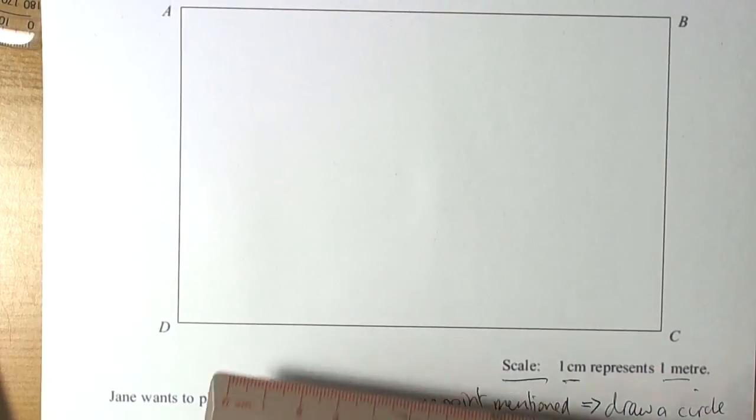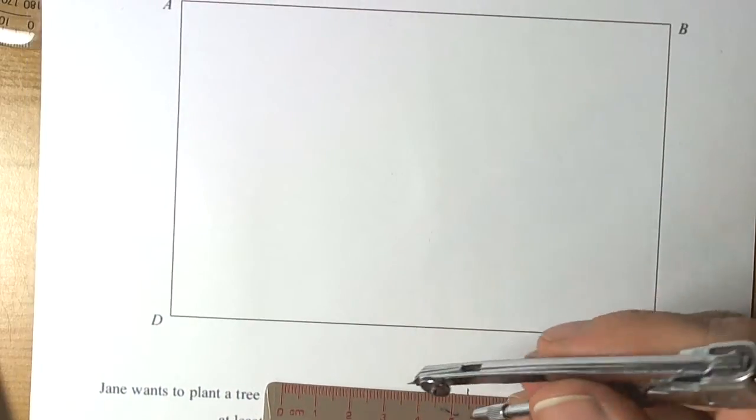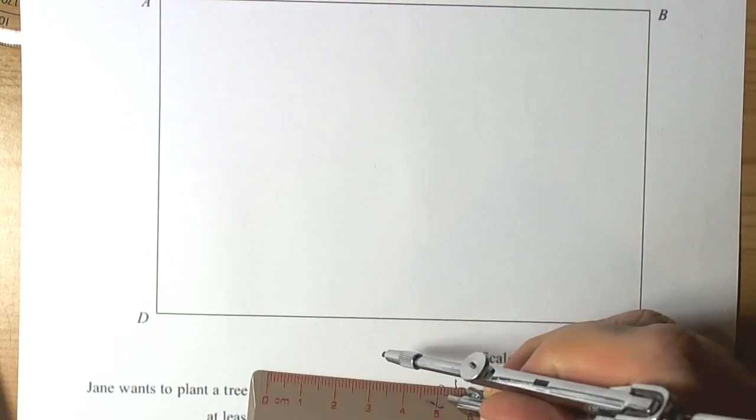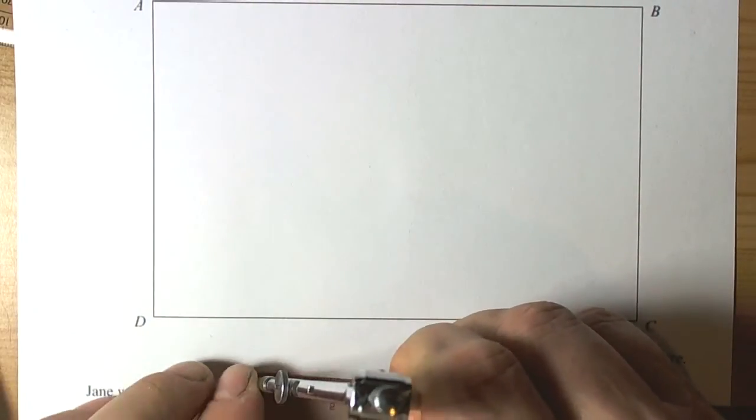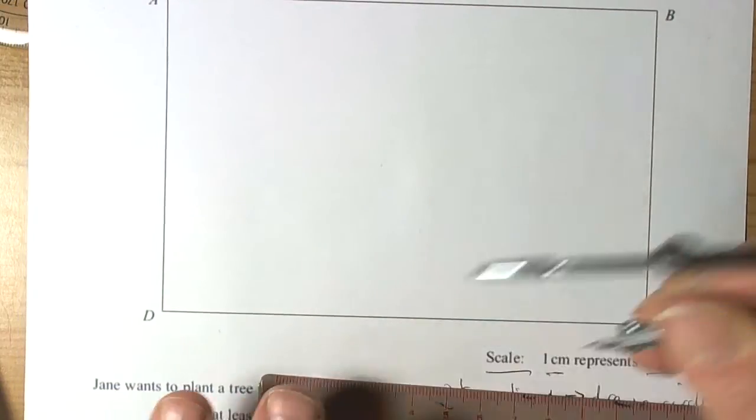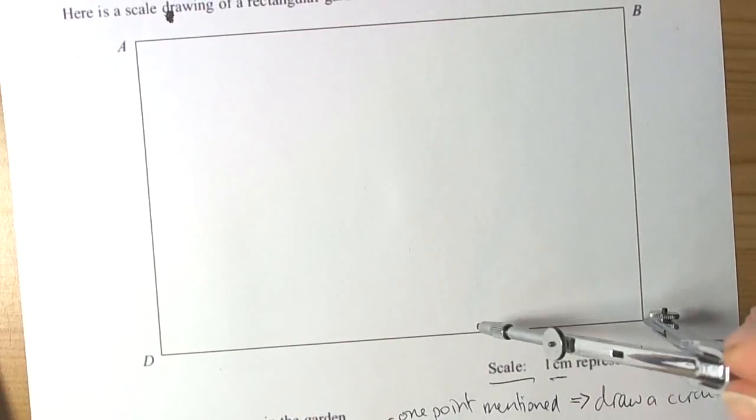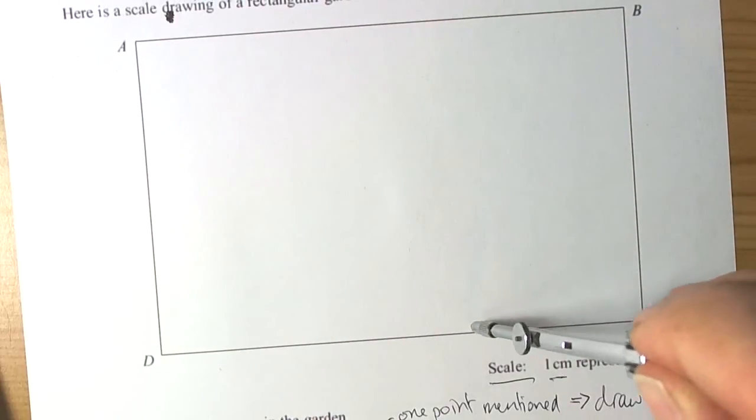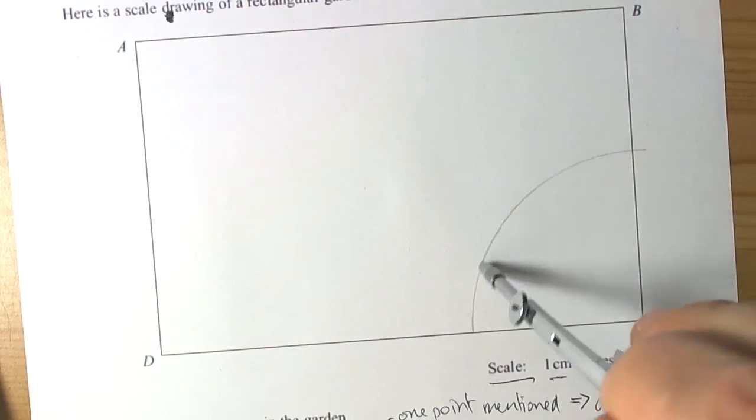The first thing we need to do is we get our ruler and we measure five centimetres and we draw a circle from the point C. Because the tree is inside the garden, then we don't actually end up drawing the whole circle. But, in essence, that's what we're doing.